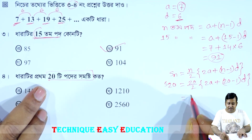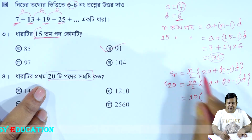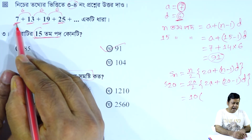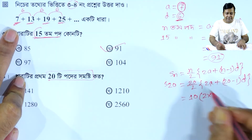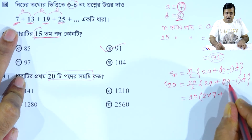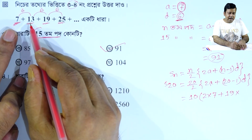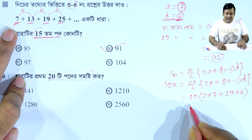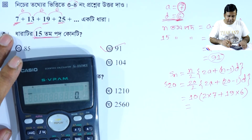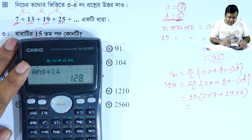We cut to get 10 times. So a equals 7. Therefore: 2 into 7 plus 20 minus 1, which is 19, into d. And d is equal to 6. So the calculation is: 19 into 6 plus 14 into 10, giving us the sum of 20 terms.